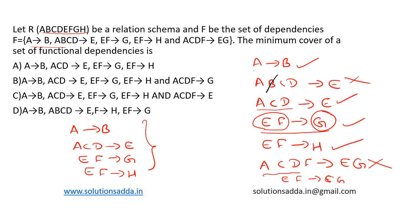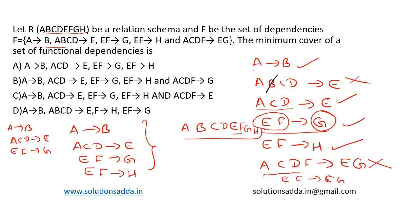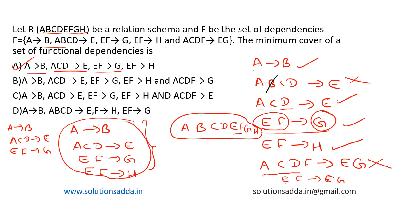Let's verify using these dependencies whether we can generate the whole attribute set. A determines B, so AB is generated. ACD determines E, so we get C, D, E. EF determines G, so with EF we can determine G. Similarly, EF determines H. So the full attribute set A, B, C, D, F, G, H can be determined using this minimal cover. From the options, option A — A determines B, ACD determines E, EF determines G, EF determines H — is the correct choice.